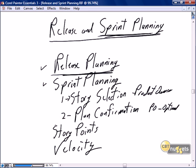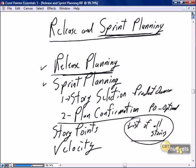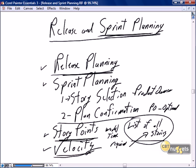At the end of the sprint planning meeting we have an absolute list of all the stories that will be completed in the sprint, and we have confidence that all of those stories can be completed because we've selected and agreed to them based on an understanding of the story points associated with each story. A story point is the work and time required to complete a story, and velocity is the team's capacity — how many story points can be completed within the sprint.